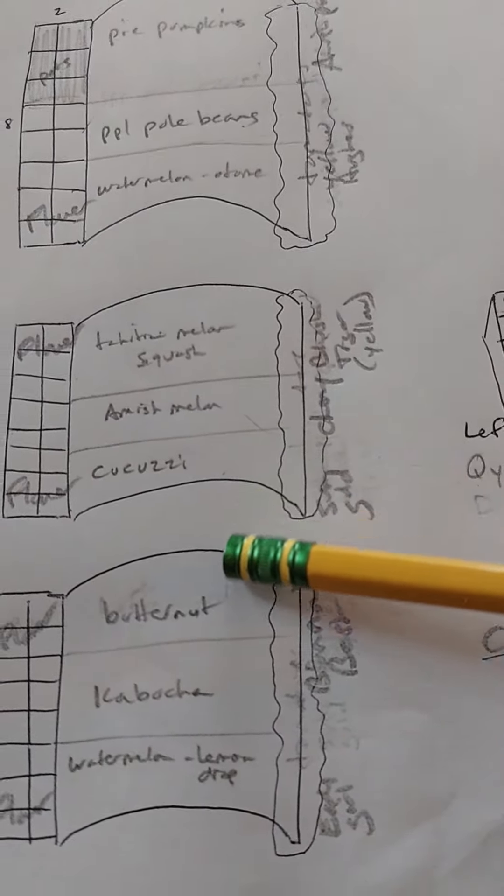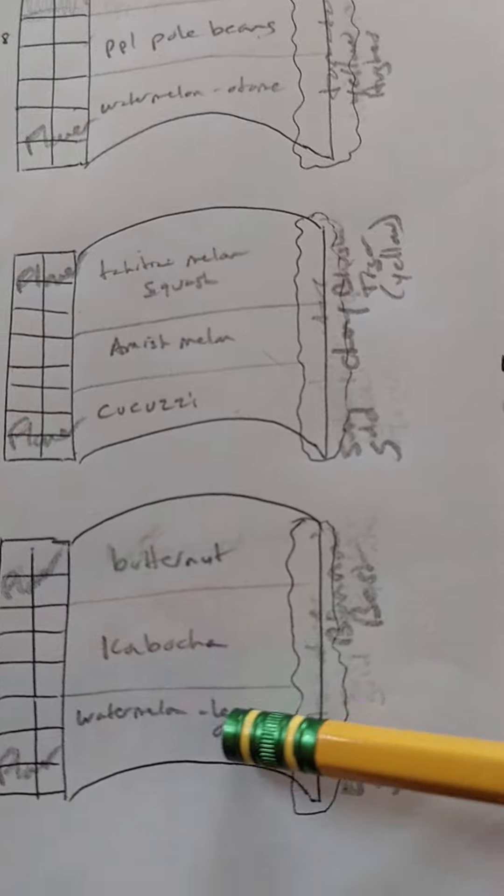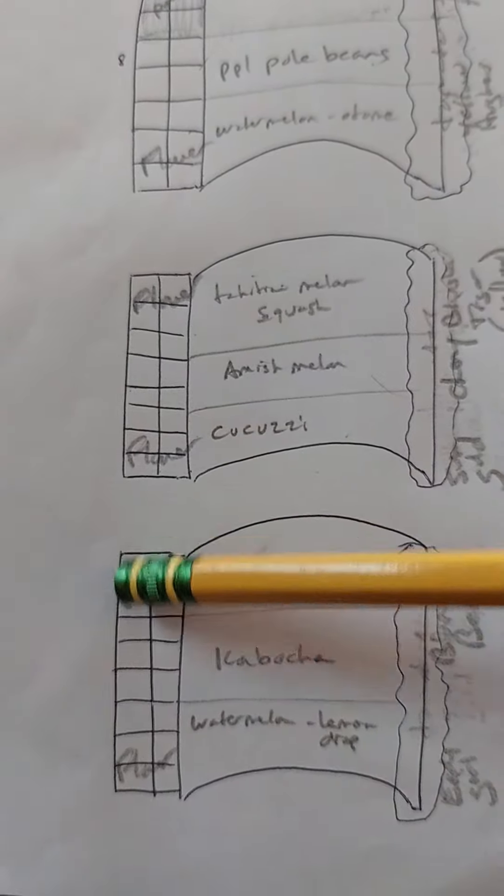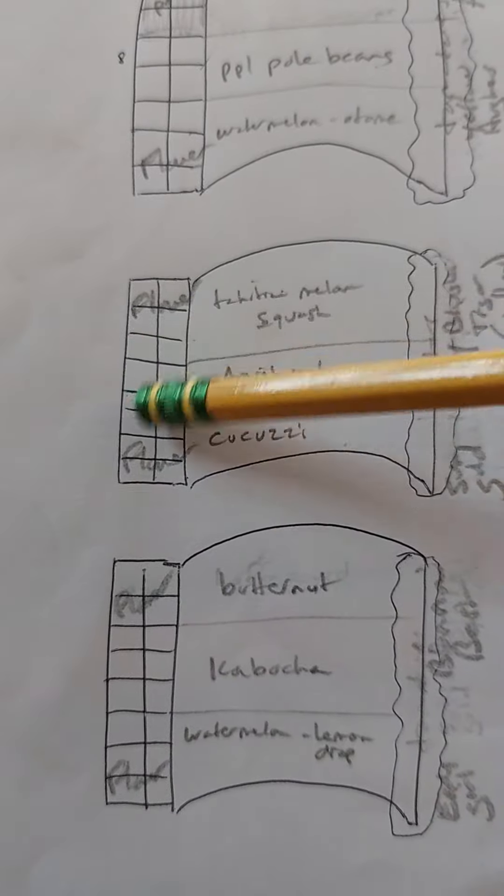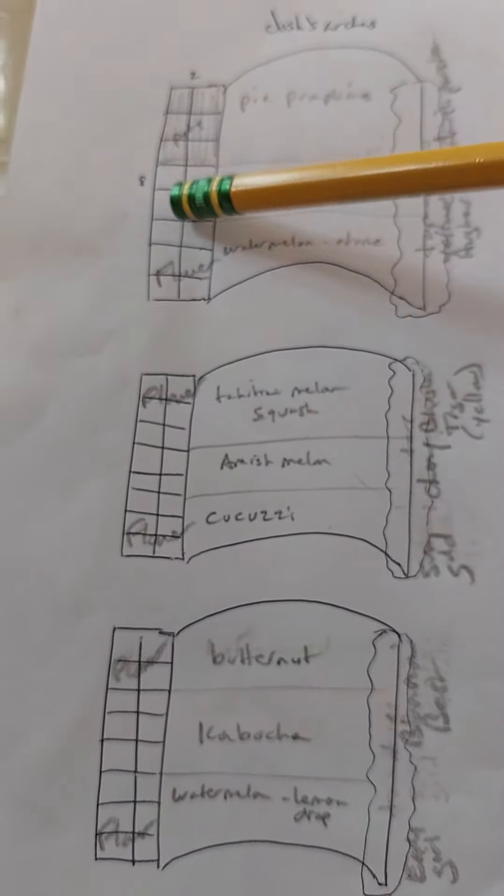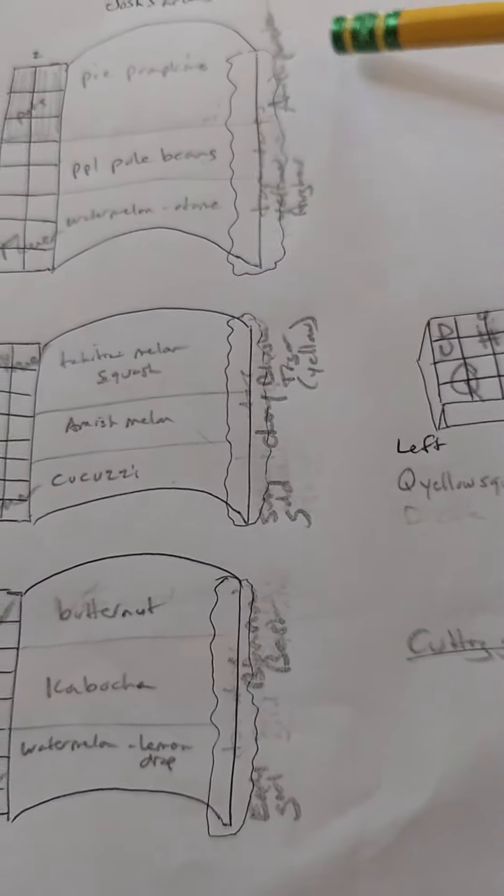Amish melon, cucuzzi, butternut, kabocha, and more watermelon. I'll have some flowers here and here. This is empty space, empty space. Flowers, flowers, flowers. Thinking potatoes here. I might extend that all out here. These are going to be all kinds of different tomatoes on this side.